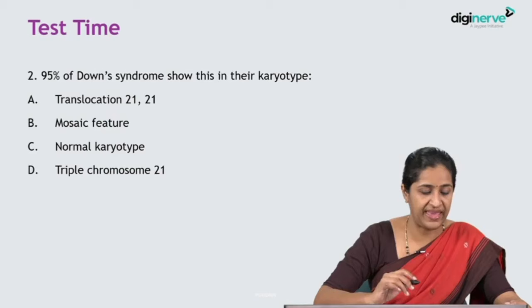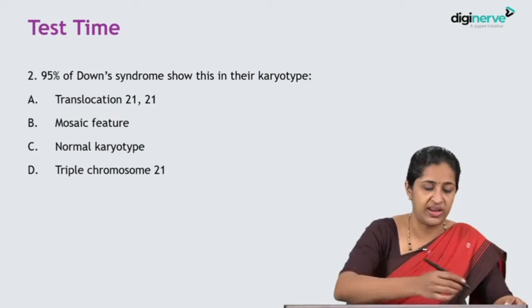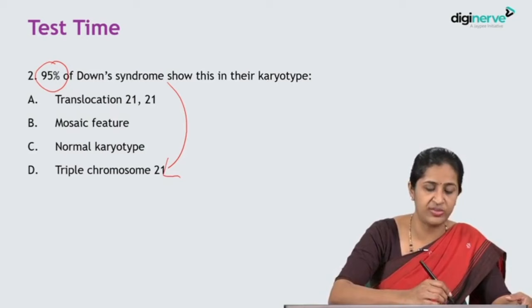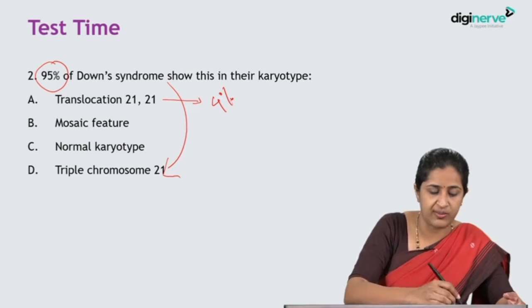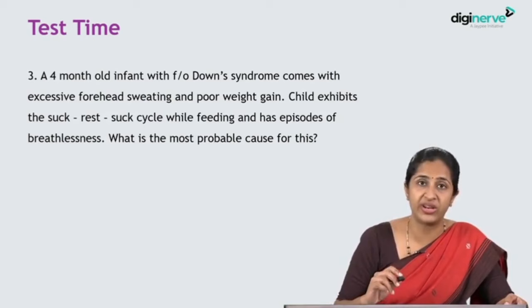Question 2: 95% of Down syndrome show this in their karyotype. A. Translocation 21/21, B. Mosaicism, C. A normal karyotype, D. Trisomy 21. We know that 95% of Down syndrome show trisomy 21; translocation is seen in 4% and mosaicism in 1%. The correct answer is D: trisomy 21.